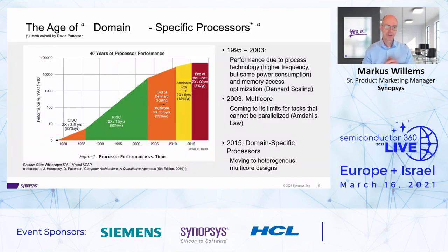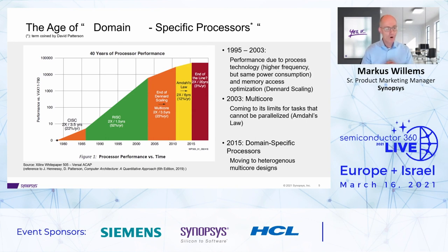Before going there, let's have a brief look at why there is such an interest to design your own domain-specific processor. This graph here might look familiar to many of you, and it indicates the performance that processor solutions have achieved over time. There was a time where the performance increase was simply coming by moving to the next technology node, by moving to higher frequencies, by moving to more advanced memory architectures, without doing any real modification to the instruction set or the processor architecture itself.